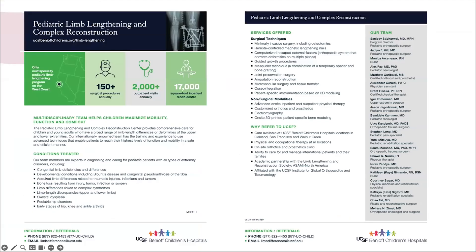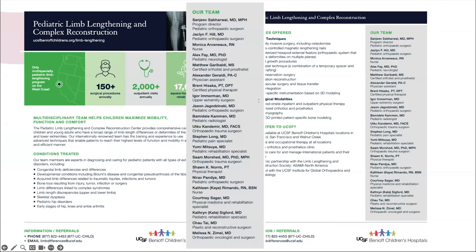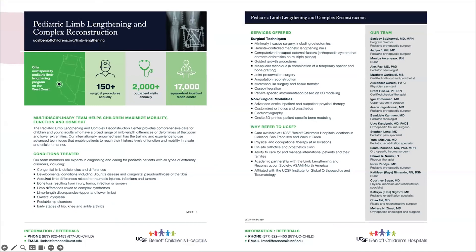Our referral handout demonstrates our current efforts to improve access to limb care on a local, national, and international level through a multidisciplinary team approach. Our wide-ranging interdisciplinary team includes key members from physical therapy, occupational therapy, orthotics and prosthetics, pediatric pain specialists, and traumatologists — both adult and pediatric, upper and lower extremity specialists. For our international patients, we have access to programs providing interpreter services, transportation, on-site housing, as well as food and other basic necessities.